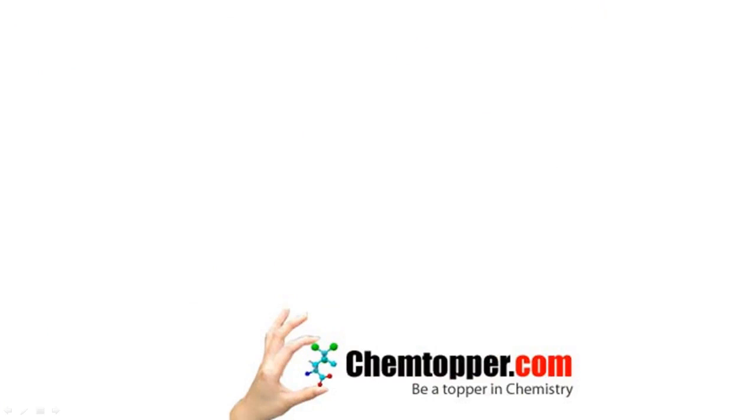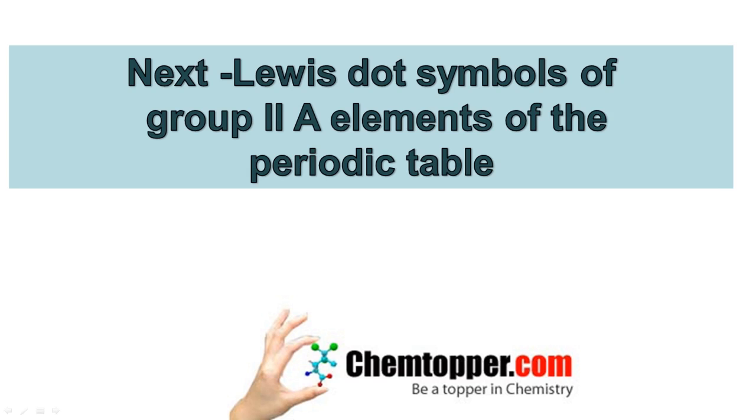In this tutorial we have learned how to draw Lewis dot symbols of Group 1A elements of the periodic table. In the next tutorial we are going to learn how to draw Lewis dot symbols of Group 2A elements of the periodic table.